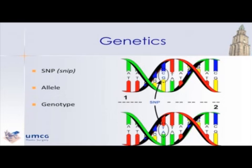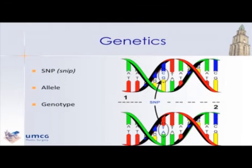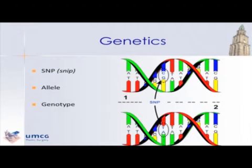I'll explain some basic genetic concepts. With genome-wide association studies, we study common variants. The variant we use is a single nucleotide polymorphism — we call it SNP. This is a variation at a single base pair. For instance, at a certain location one individual has a C allele and a G allele, while at that same location another individual has a T and an A allele. When combining hundreds of thousands of alleles, we get a fingerprint of an individual, and this is what we call a genotype.